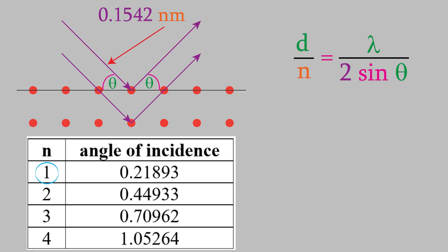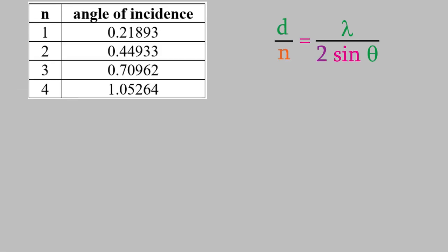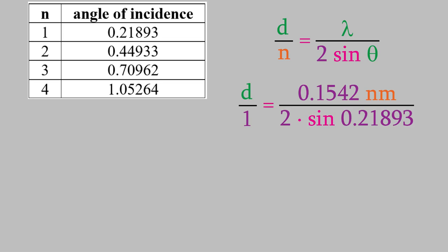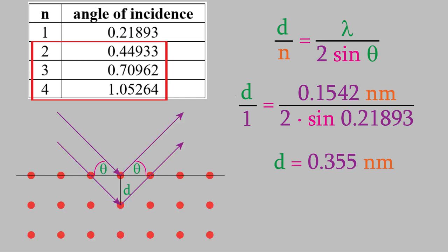What can we do with this information? The main thing we can do is determine d, the separation between the atoms. Let's solve the equation for d by plugging in the data where n is 1, and we have theta equals 0.21893. That gives us a value for d of 0.355 nm. That's also what we get if we use the angles for the other locations of constructive interference. So, now we know the distance between the atoms in the first and second layers.